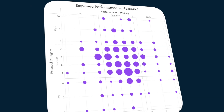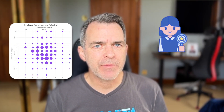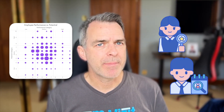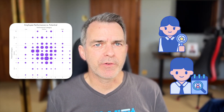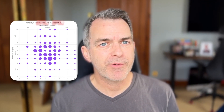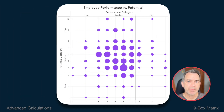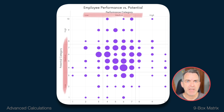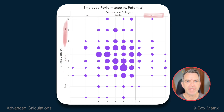In this video, I'm going to show you how to build a nine-box matrix. These are commonly used in talent management and HR to map a company's workforce along two dimensions: potential and performance. Each of these two dimensions is split up into three categories — low, medium, and high — depending on the score for each employee.